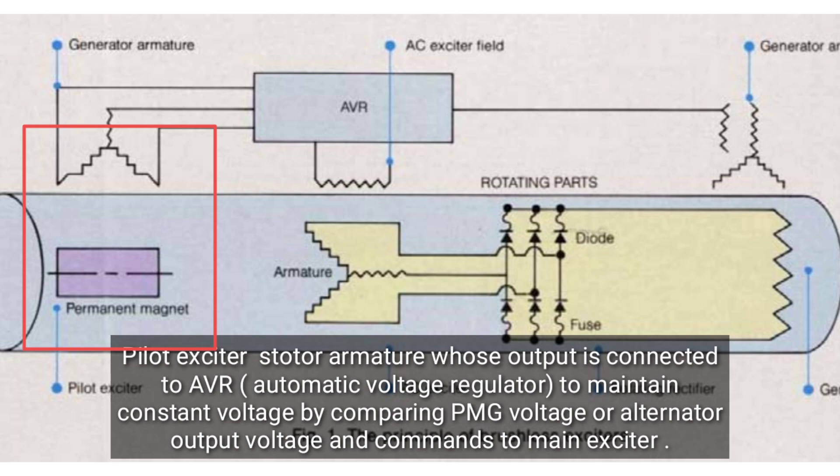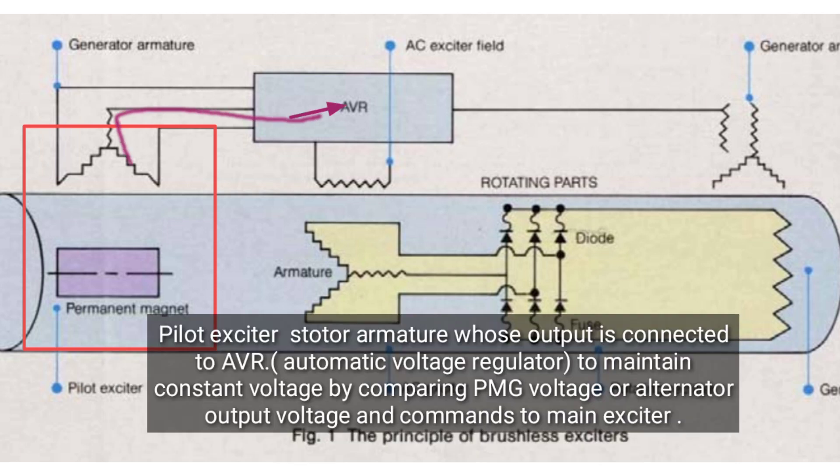The pilot exciter output is connected to the AVR automatic voltage regulator to maintain constant voltage by comparing PMG voltage or alternator output voltage and sending commands to the main exciter.